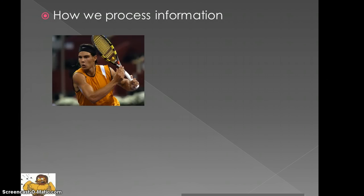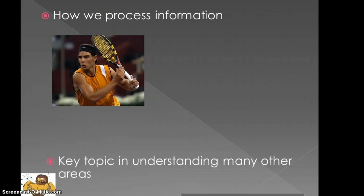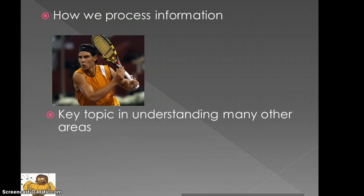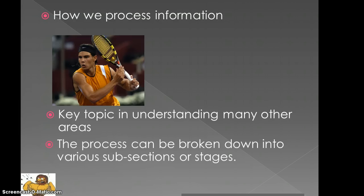In essence we're talking about how we process information. So how is this tennis player able to affect the decisions he makes, have such a successful outcome, and react very quickly? One of the reasons we start with this model is that key topics within the model are also in different areas of acquiring movement skills, so if we can understand this it will assist us in understanding those different areas. The process can also be broken down into subsections or different stages, and similar stages can be applied to different areas of acquiring movement skills.